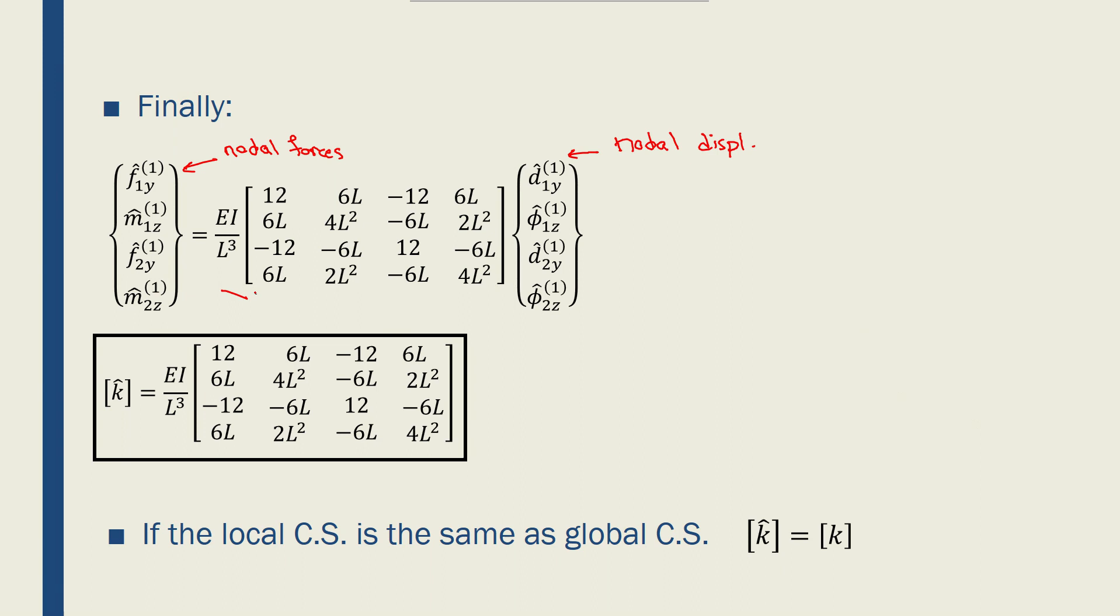We can write this equation, or this matrix. 12 is the coefficient of d1y for f1y, 6L is the coefficient of phi1z, minus 12 is the coefficient of d2y, and 6L is the coefficient of phi2z.